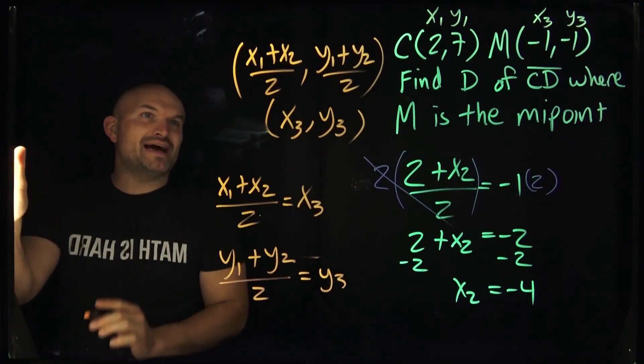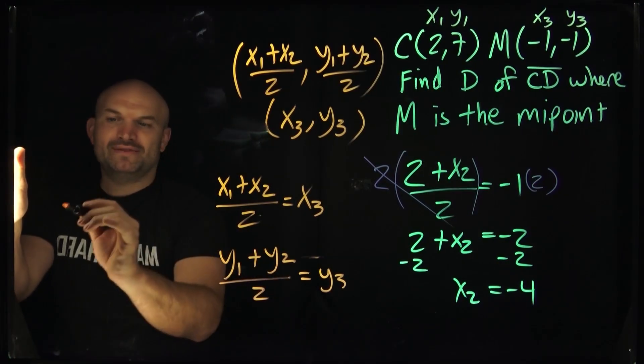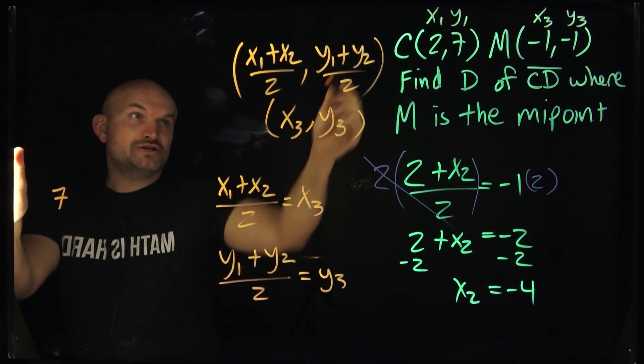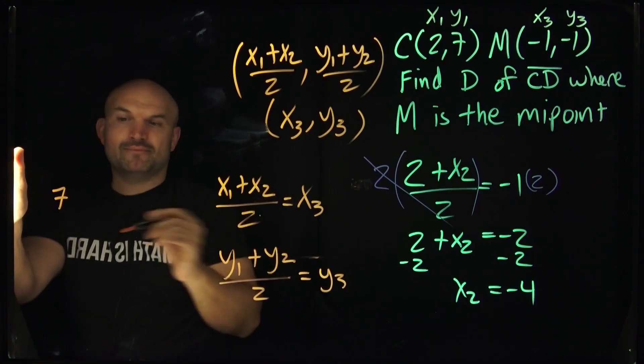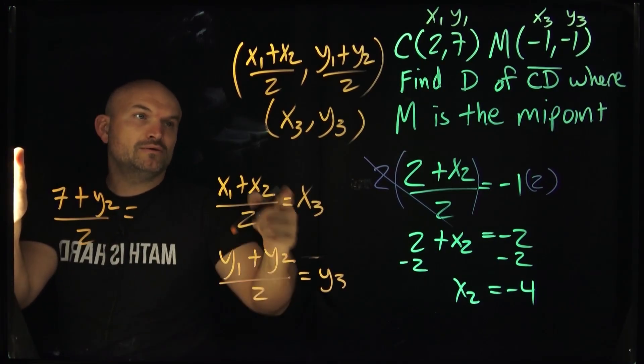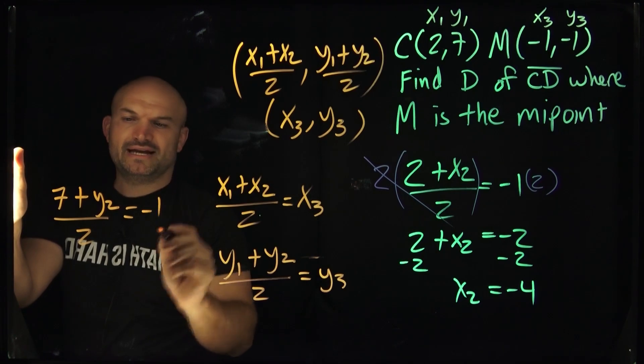Now, let's do the Y. So do we have a Y1? We do have Y1. That's going to be a 7 plus Y2, which we do not have. The Y2 is our unknown. That is going to be our second point. So it's going to be plus a Y2 divided by 2 equals a Y3, which we do know what Y3 is. That's going to be a negative 1.